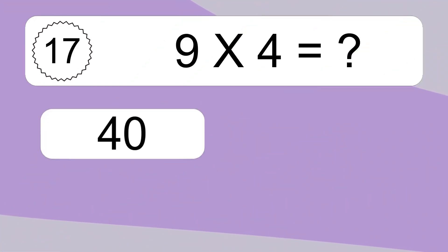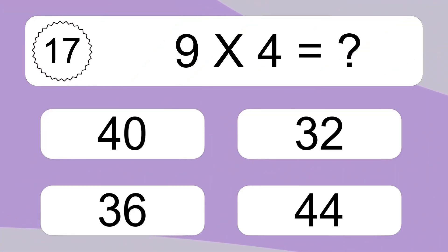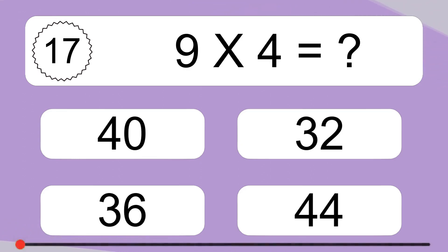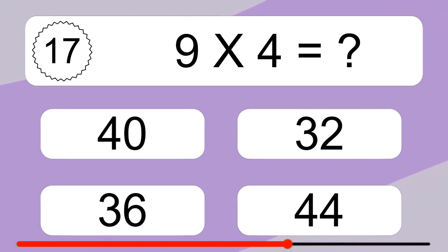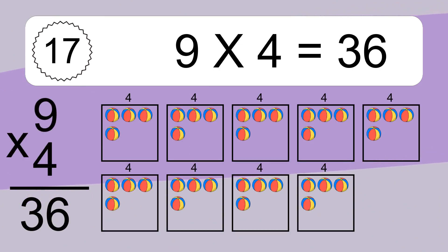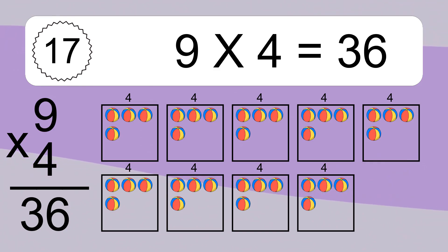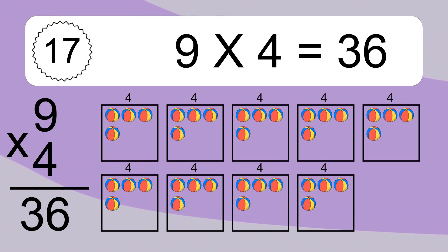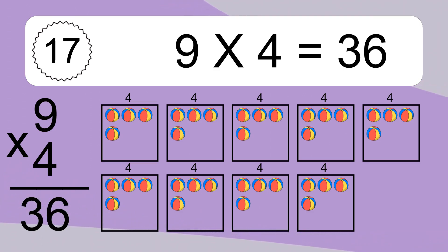9 times 4 equals what? 9 times 4 equals 36. We have 9 boxes and each box has 4 colorful balls inside. If you count all the balls in all the boxes together, you will have 9 times 4 balls. This equals 36 balls.